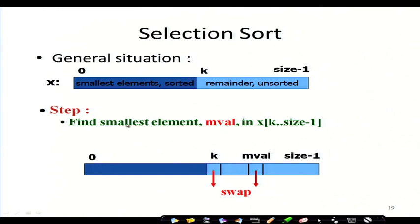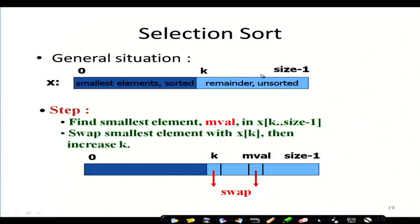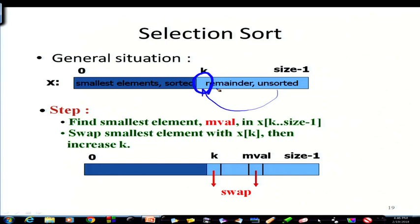The step is: we find the smallest element — the minimum value — in the list from k to size minus 1. Then we swap that minimum value with the kth position, bringing the minimum value to that position. Then we increase k to the next position, and in this way we go on.